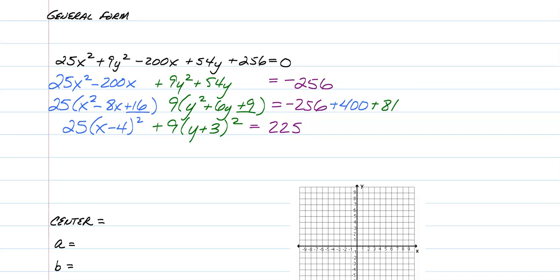And from there, we have to get to the part where it's equal to 1. When we're equal to 1, that means that we have to divide everything by 225. And now, what we do is we reduce this fraction over here. And that's going to give us (x - 4)²/9 + (y + 3)²/25 = 1.